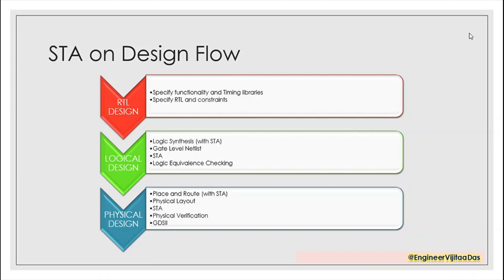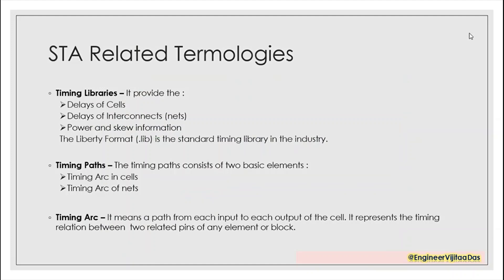Once timing is done, we move to physical verification where we check the functionality, design constraints, and electrical constraints. Once these are done we generate a GDSII file, which is given to the fabrication team. The GDSII file basically contains the total physical layout in ASCII language. This is the overview of how we analyze timing throughout the design flow.